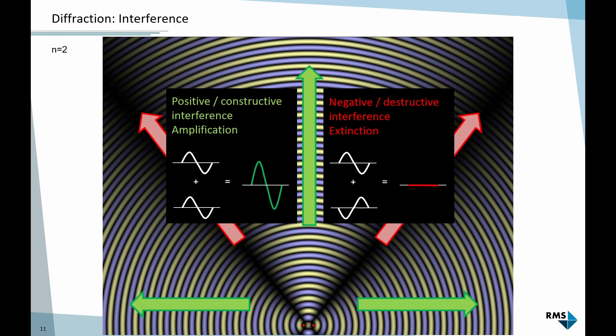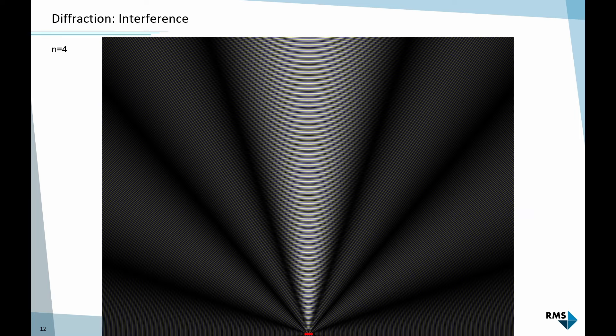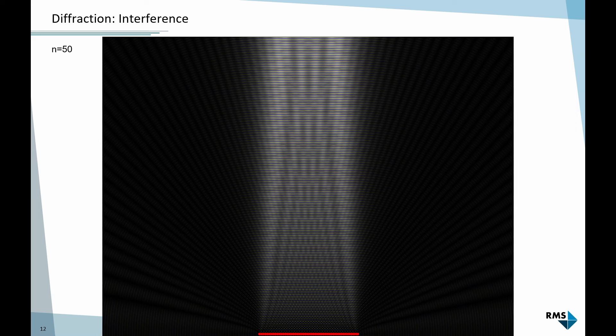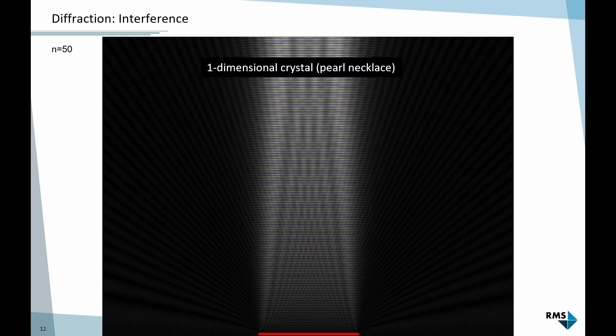When we add more sources — 4, 8, 12, 25, 50 — the pattern changes. With 50 sources in a row at equal spacing, emitting the same circular waves, what remains is essentially one direction with positive interference, and in all other directions there is destructive interference and the secondary waves cancel out. If we changed the phase from one point source to the next, the direction of this beam would shift to the right or left.